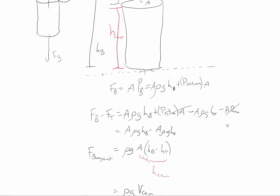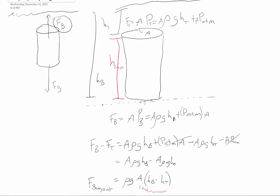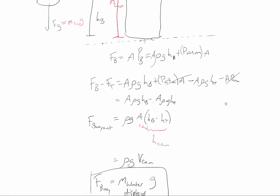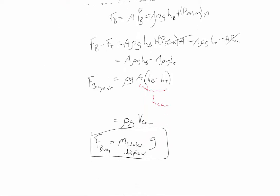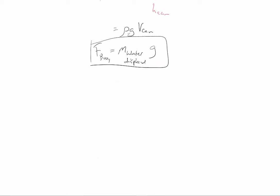This gives us an interesting result. If the can is floating at neutral buoyancy, it means the force of gravity — mass of the can times g — equals the mass of the water displaced times g. So the mass of the can equals the mass of water that the same-sized volume of water would have. That's a pretty remarkable result, and it's the whole idea of buoyancy: whatever you put in displaces water, and the buoyant force equals the weight of that displaced water.